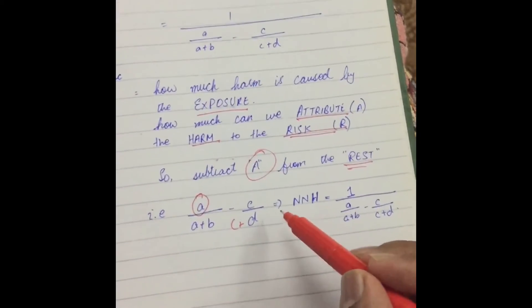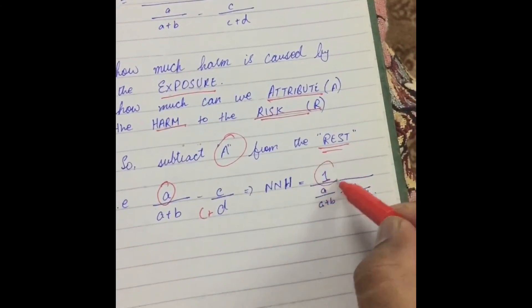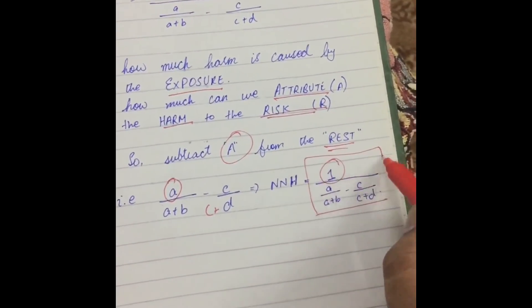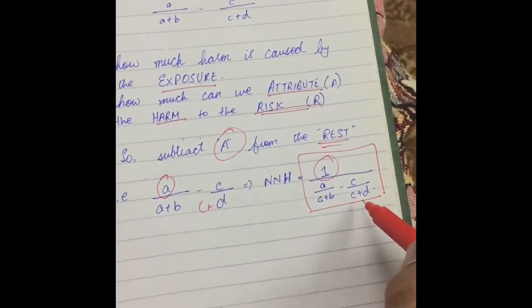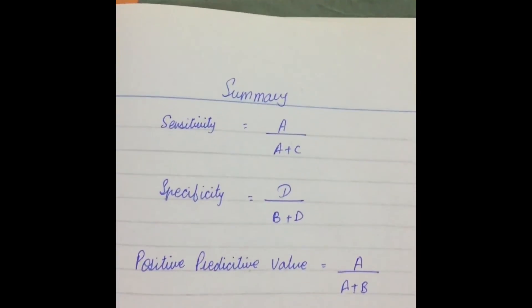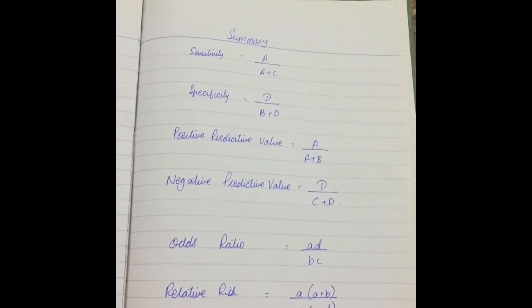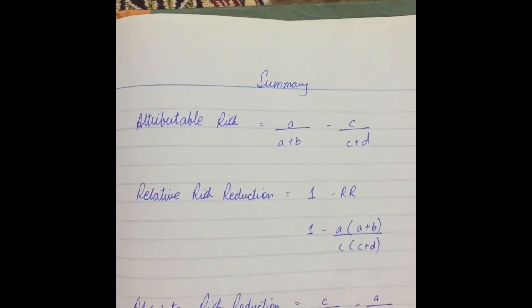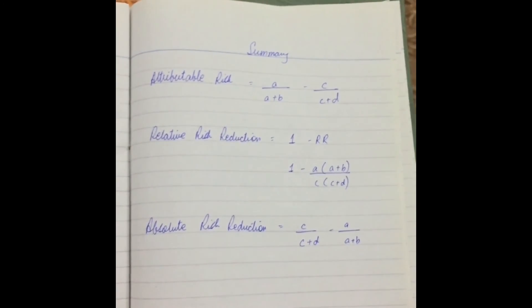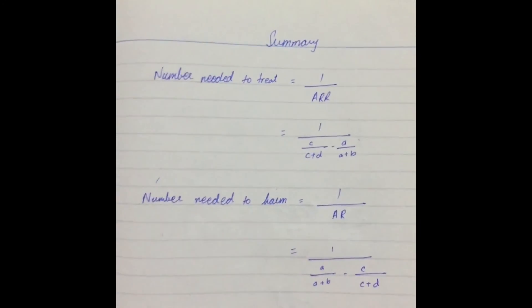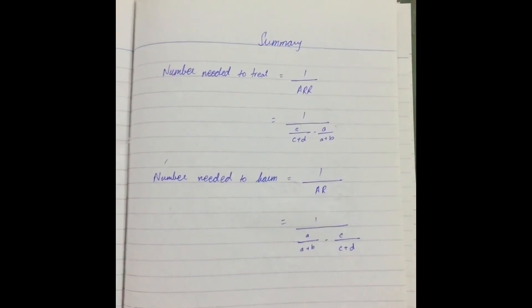Since it's not attributable risk, but number needed to harm, we can divide the whole equation by 1, and it will become like this. 1 by A plus, divided by A plus B, minus C, divided by C plus D. 1 by A plus, divided by C.